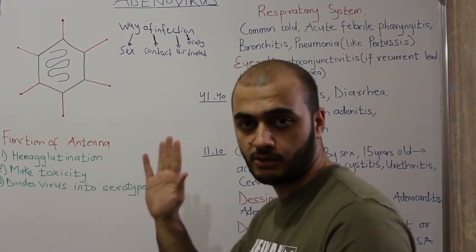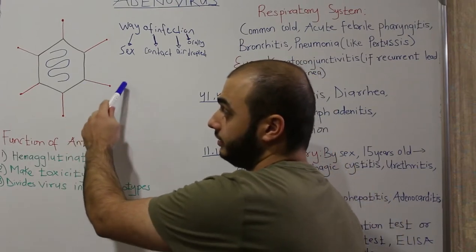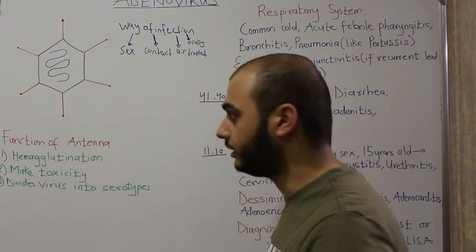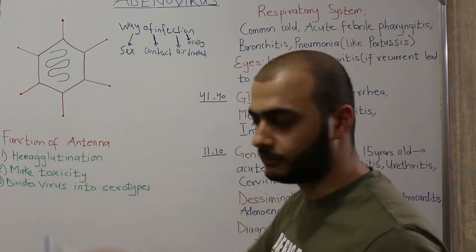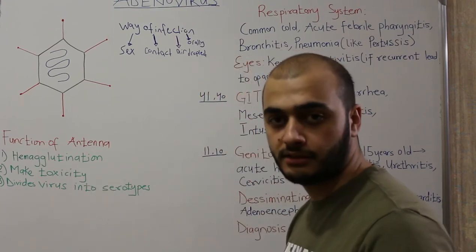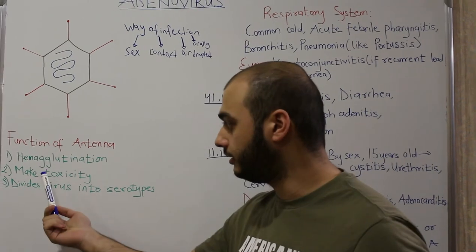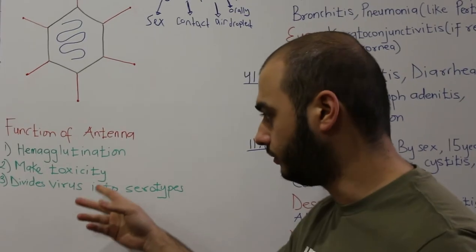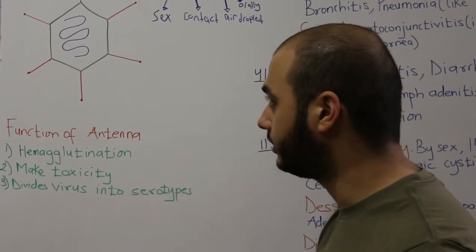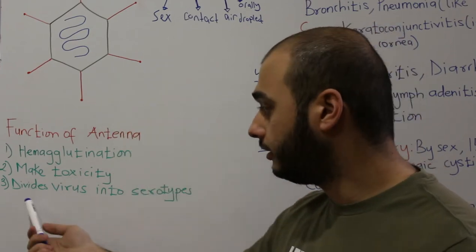Like all viruses, it has an icosahedral shape, but what is unique in its structure is that it has antenna projections. The only virus which has antenna is adenovirus. The function of this antenna is to make hemagglutination with blood and contribute to the toxicity of the virus, so the manifestations caused by this virus are due to this antenna.